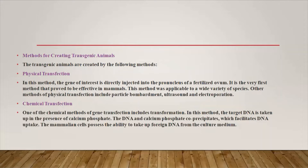Let us look at the process, importance, and application of transgenic animals. The first method of creating transgenic animals is physical transfection, where the gene of interest is directly injected into the pronucleus of a fertilized ovum. It is a fast method that proved effective in mammals and applicable to a wide variety of species. Other methods of physical transfection include particle bombardment, ultrasound, electroporation, and microinjection.